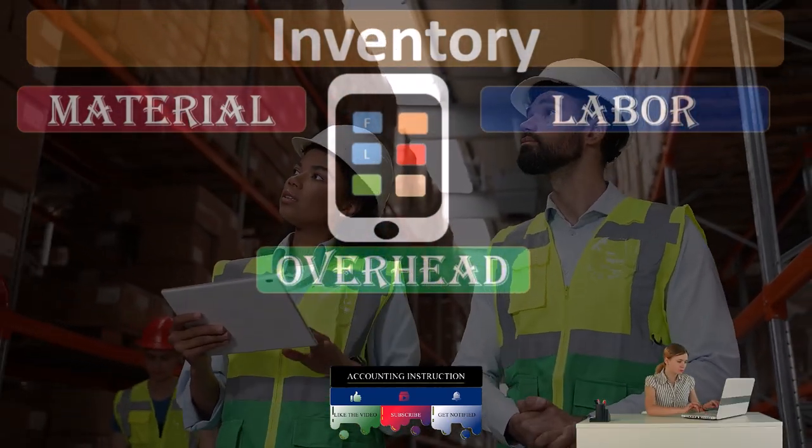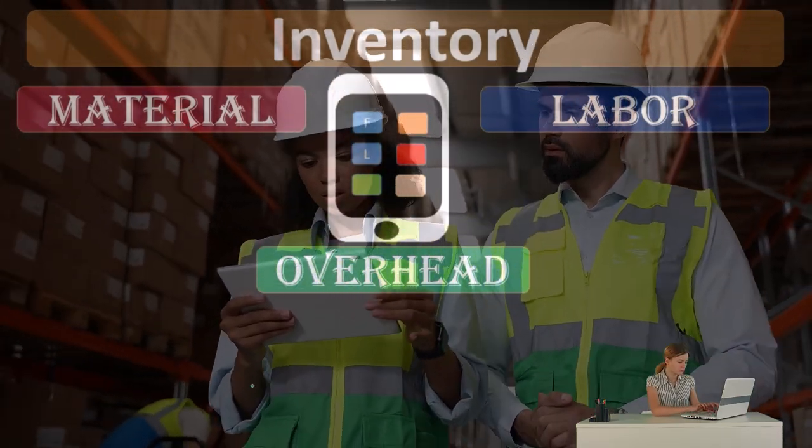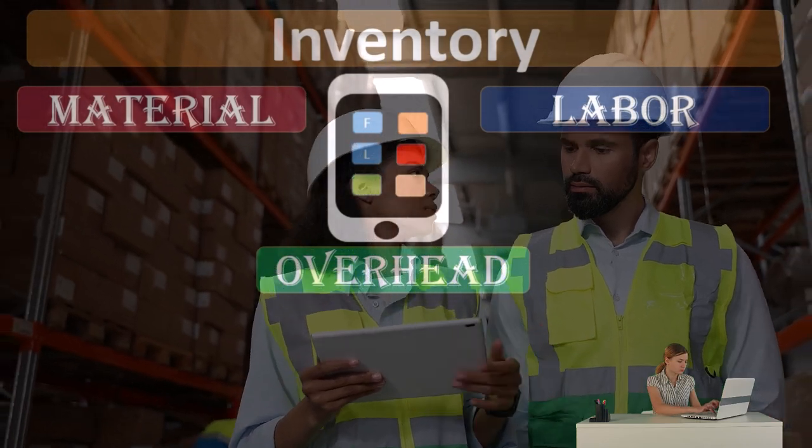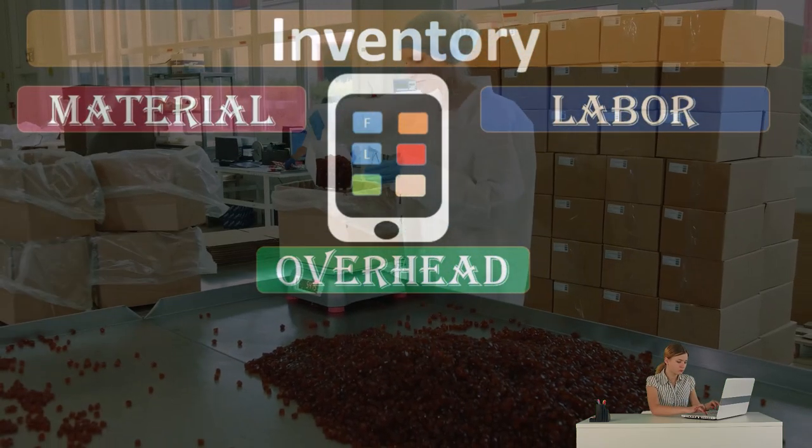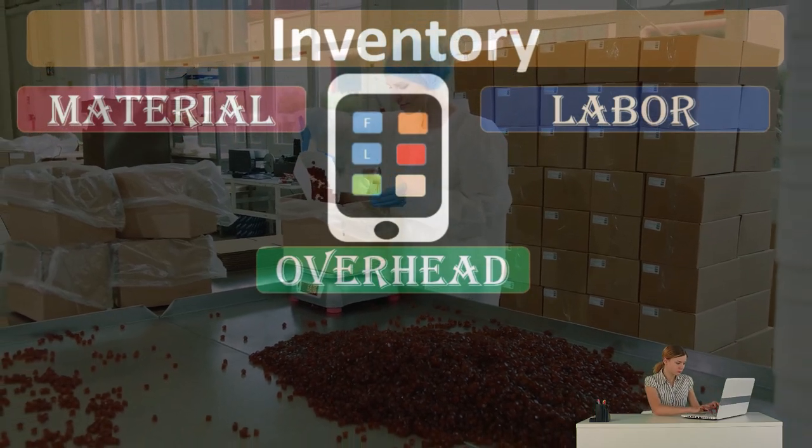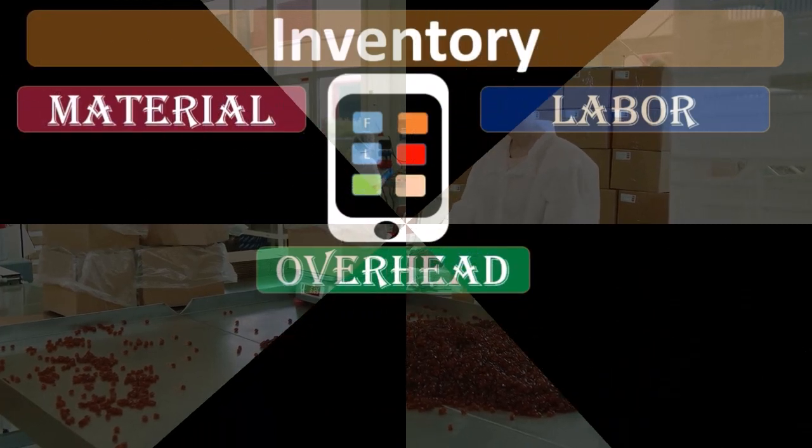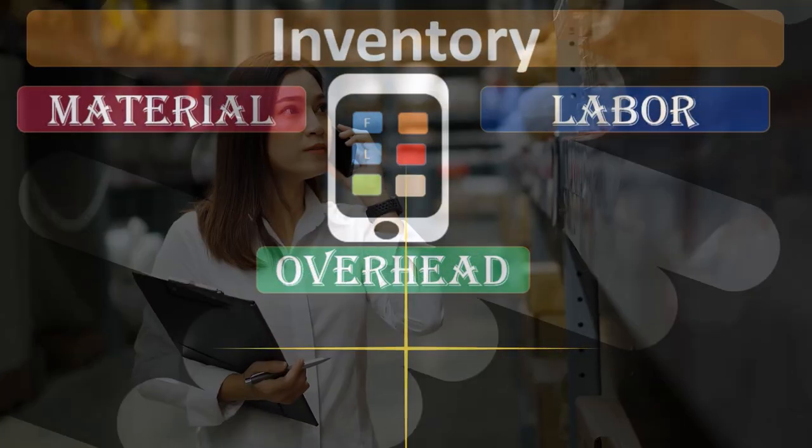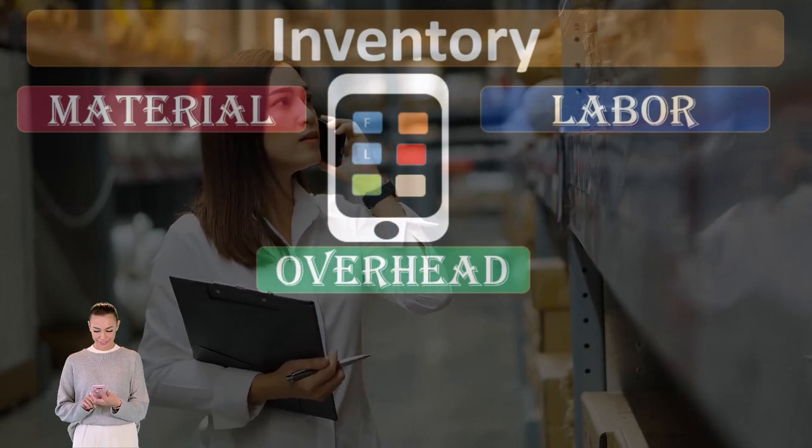Whenever we think of inventory, we really want to think of them in those three categories, meaning that inventory consists of more than just the direct materials, but the cost of that inventory is going to include the labor and the overhead. Our job then is to apply those costs to the specific unit of inventory, the specific batch, or the specific process depending on the system we are using.